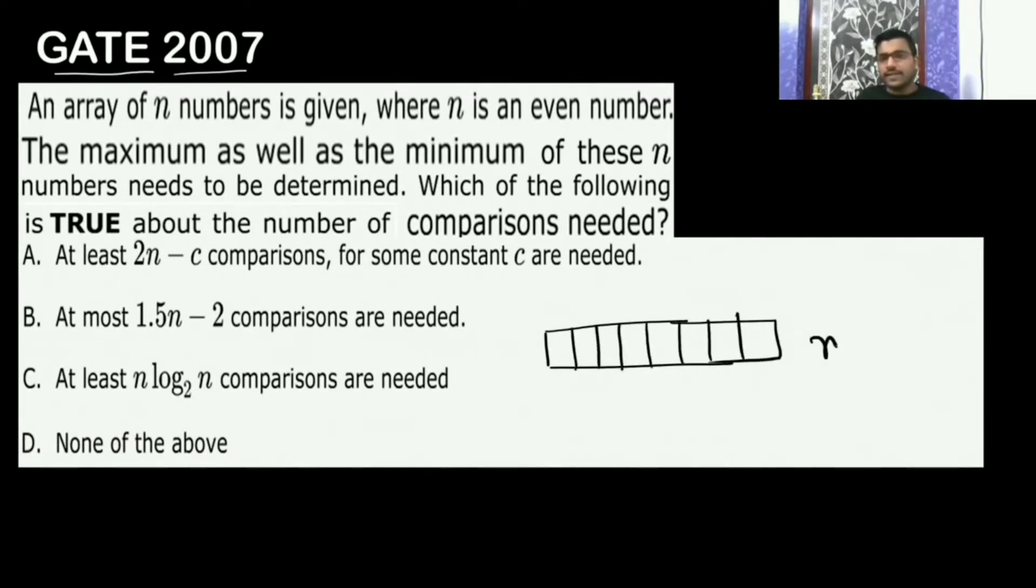And n is even, meaning n is 2 to the power k. The maximum as well as minimum of these n numbers need to be determined. Which of the following is true about the number of comparisons needed?